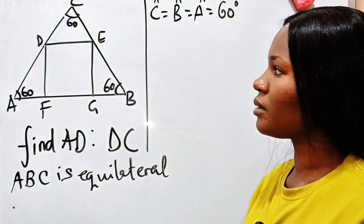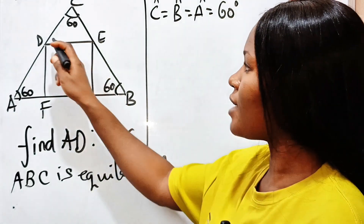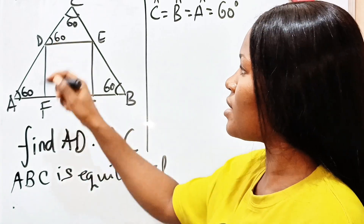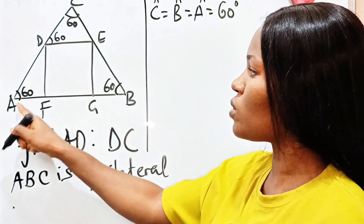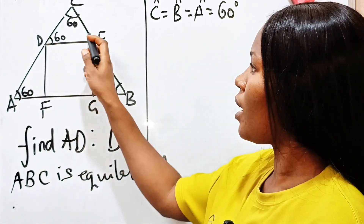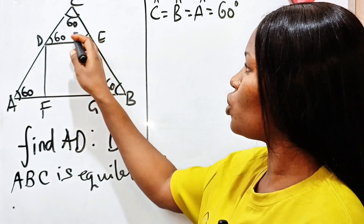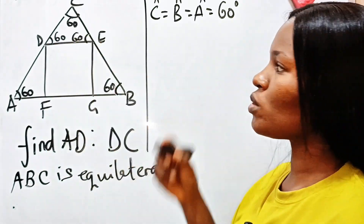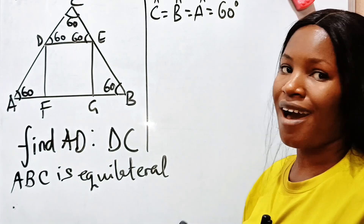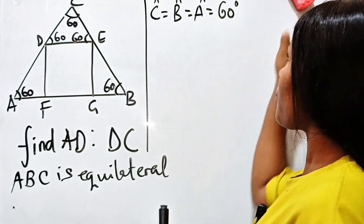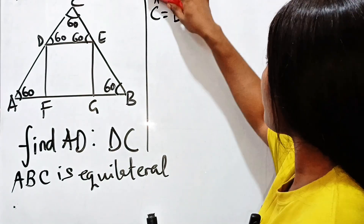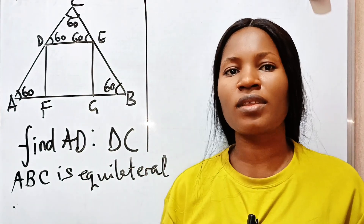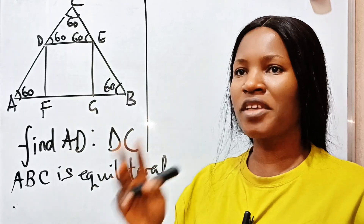Now, remember that angle D should also be 60 — it corresponds to angle A — and angle E should also be 60 — it corresponds to angle B. Let me explain.